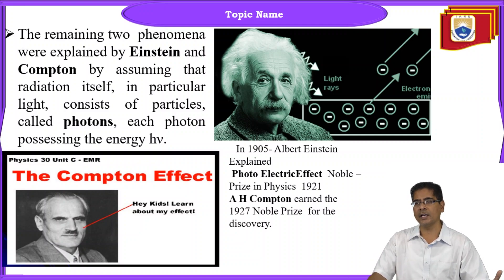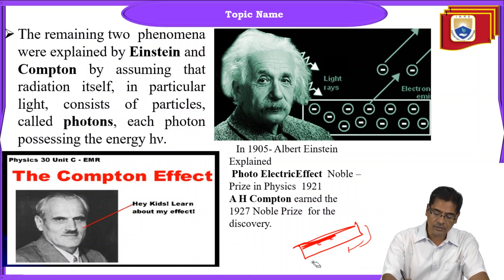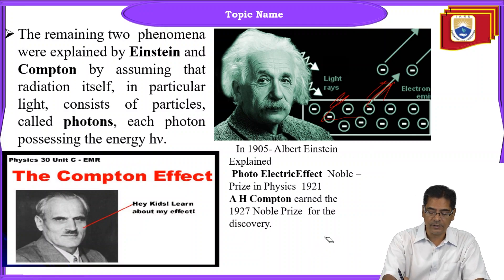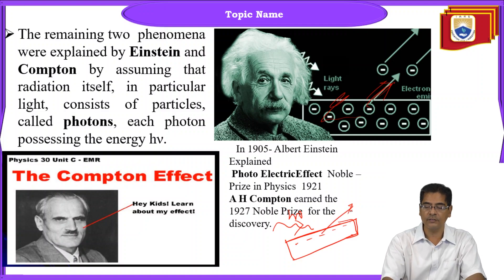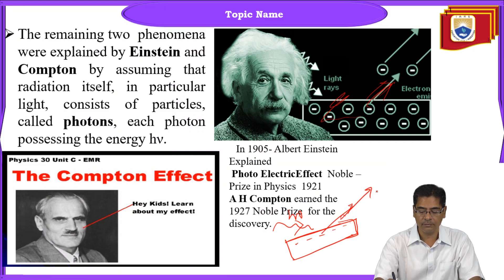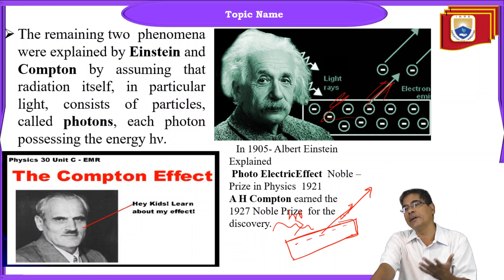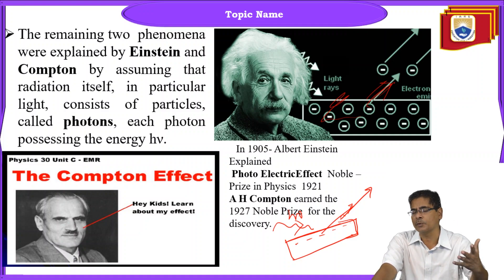In the photoelectric effect, if you take a metal and impart photo energy, the process of liberation of electrons takes place from the surface of the metal. When light of certain frequency h nu falls on a metal, liberation of electrons occurs from the surface of the metal. This phenomenon is called the photoelectric effect. After being liberated, we can calculate the work function of the electron using this photoelectric effect, proposed by Albert Einstein.